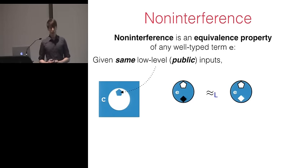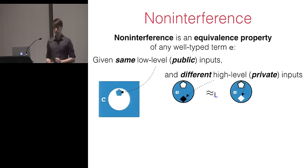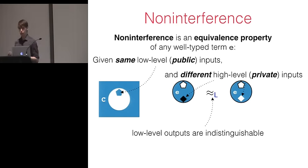Non-interference is an equivalence property of any well-typed term in the language that states that when given the same low-level public inputs but different high-level private inputs, that the low-level outputs, those that can be seen by anyone, including an attacker, are indistinguishable. So if I take the same program and I run it twice, with the same low-level inputs, but once with a database of real passwords and once with a database of bogus passwords, the attacker can't tell the difference at all. Now, let me just point out this equivalence relation here. It's indexed by a label L. And this represents the low-level observer, the attacker.